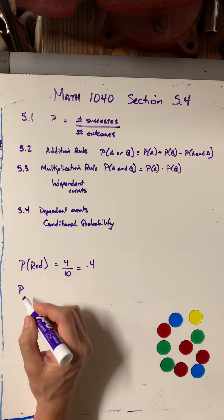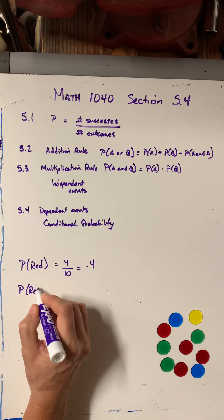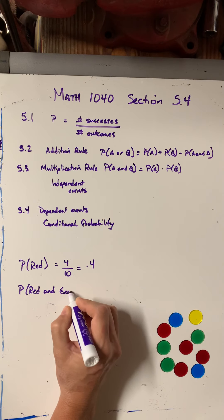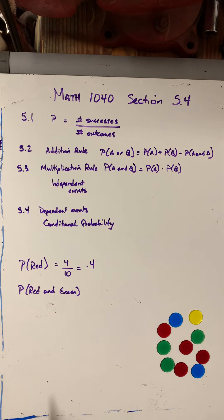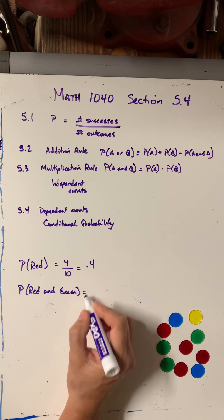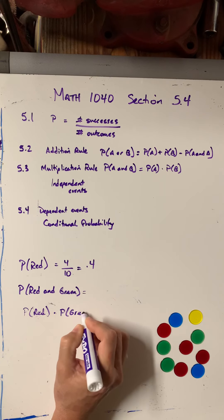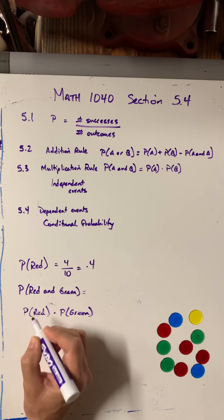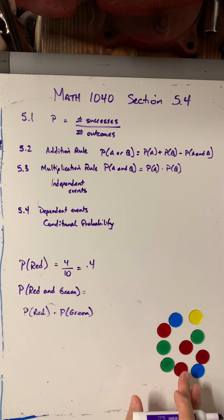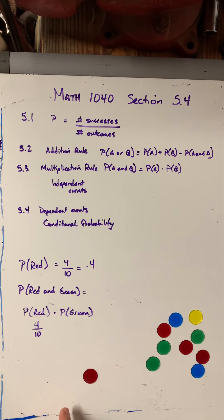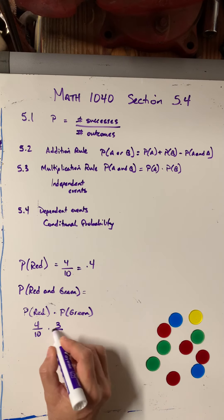What if I said, what's the probability of getting a red and then getting a green? So I'm skipping over 5.2, going to 5.3. So that would be the probability of red times the probability of green. Now, I could use this formula just the way it was if what I did was the probability of red, which is 4 out of 10. Then I put the red back and that's called with replacement. So I replaced it.